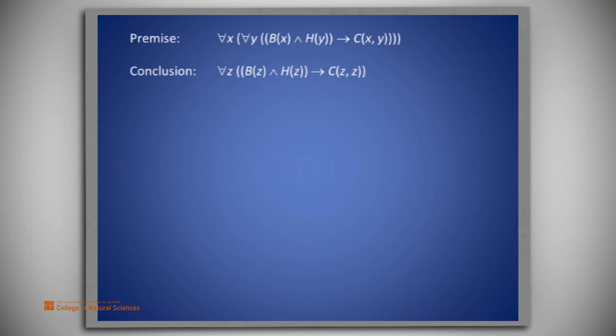So what we're going to do in this situation is universally instantiate both the X and the Y to the same arbitrary element, then universally generalize from that same arbitrary element. If you would like to complete the proof on your own, please pause this video now.